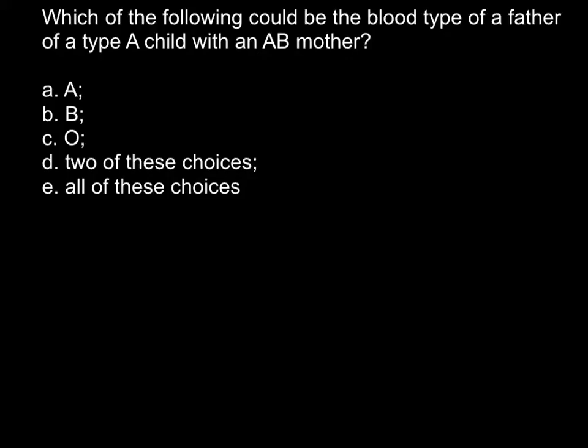Hi, today I have a very easy problem for you. This is a problem about ABO blood group system. And here is the problem: which of the following could be the blood type of a father of a type A child with an AB mother? And here are the five answers that you may choose from.